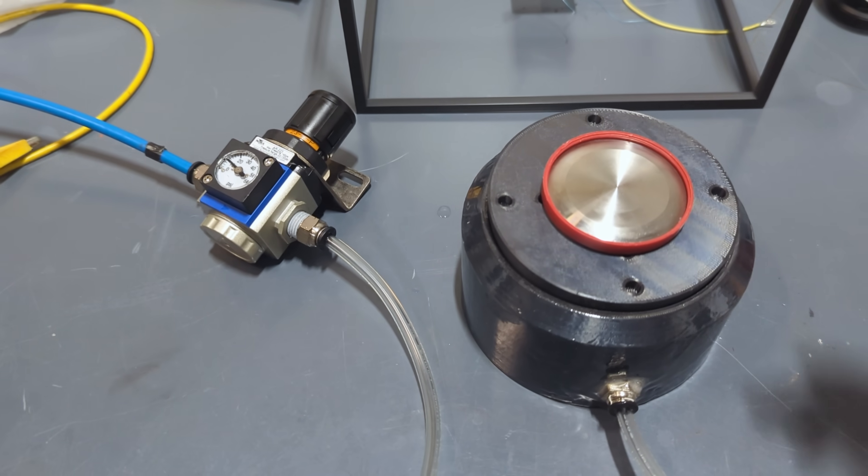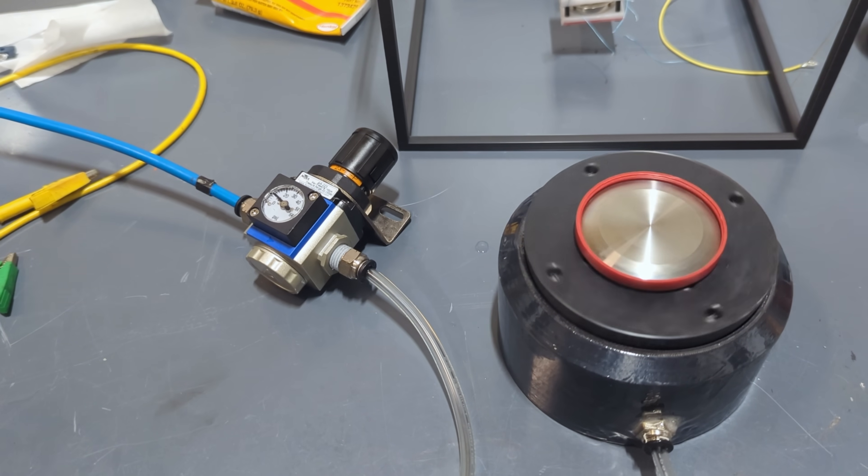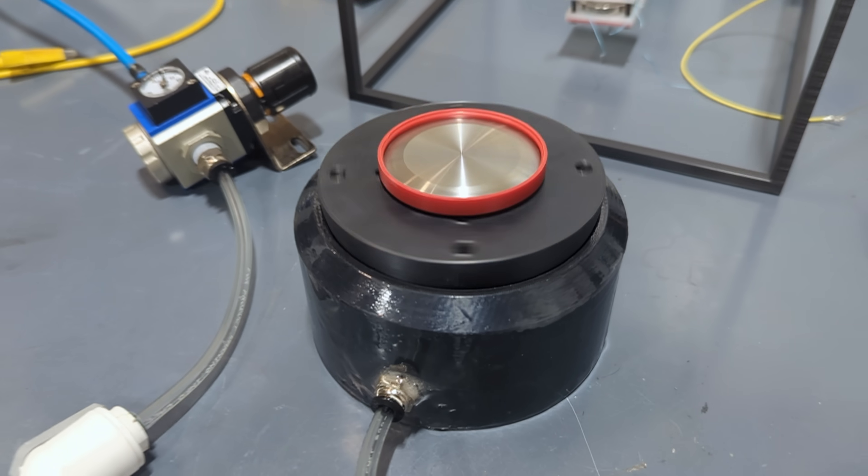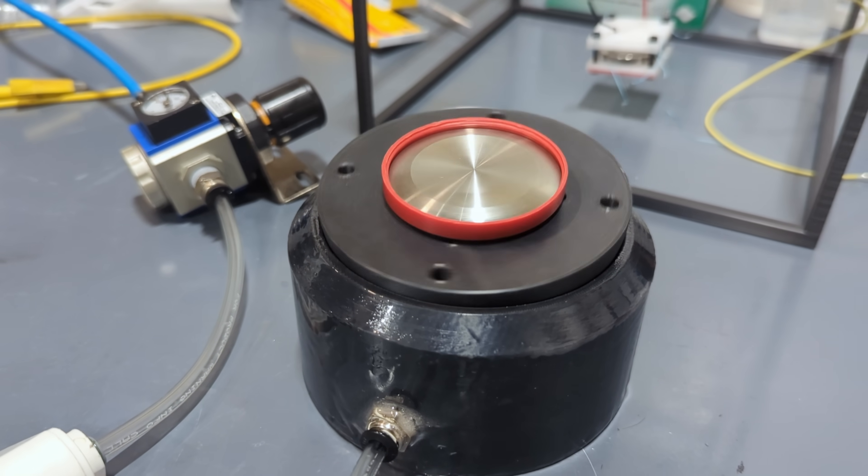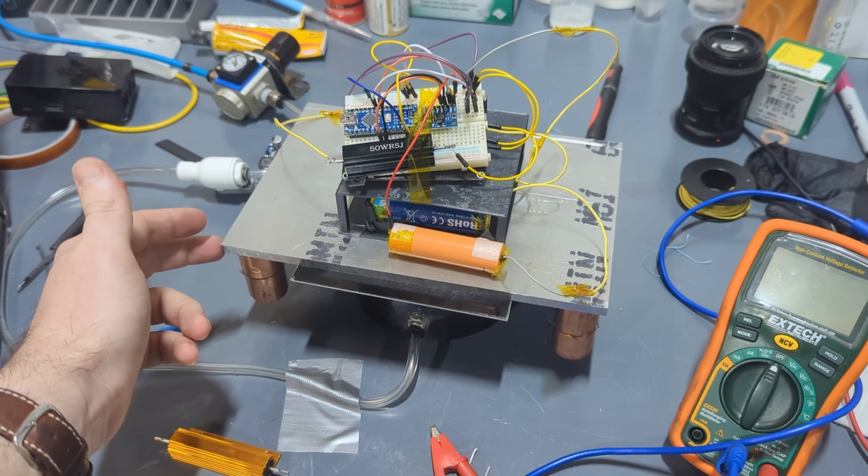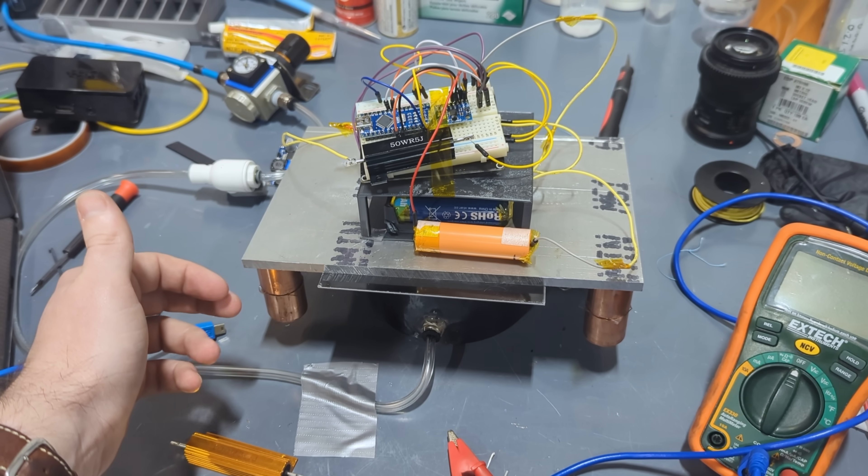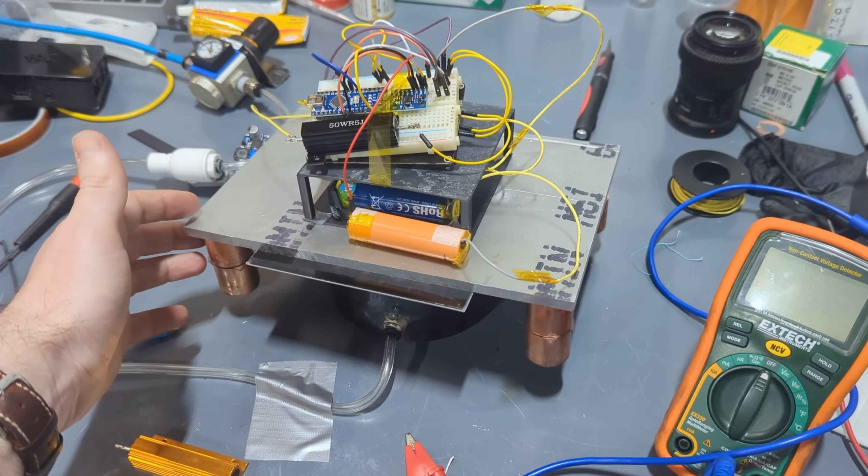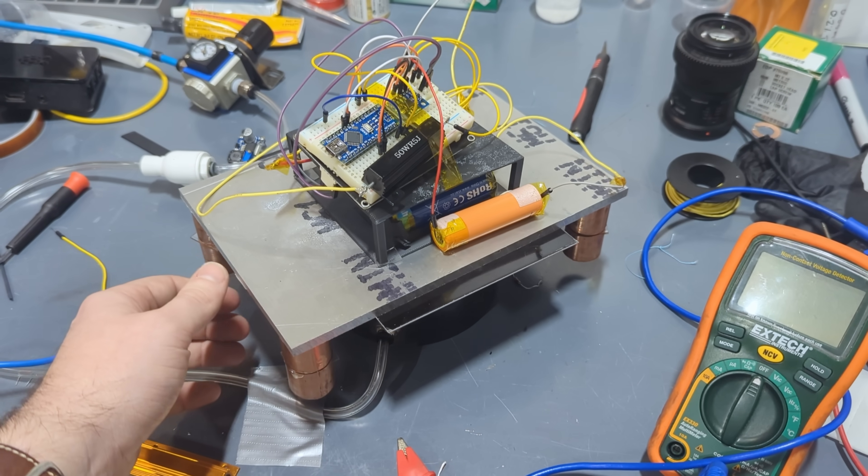I printed up two different kinds of air bearings, a hemispherical one and a simple cylindrical bearing. They are super satisfying to play with, but unfortunately the hemispherical one was pretty hard to balance. I did hang some copper weights below the table, which helped lower the center of gravity, but it was still a little too tricky to really use.